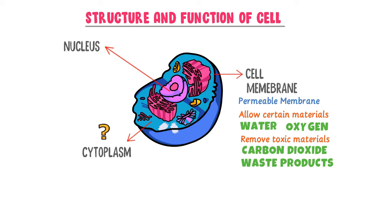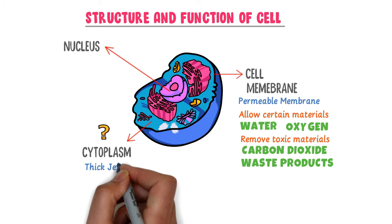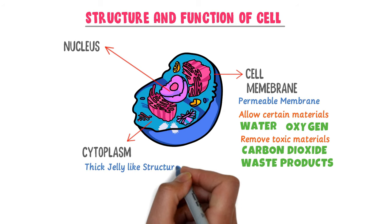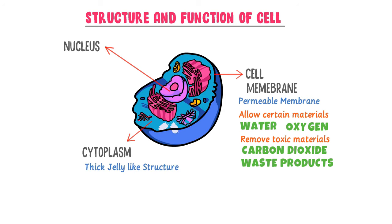What is cytoplasm? Cytoplasm is the thick jelly-like structure and it provides shape to the cell. It means that different shapes of the cell are due to the different shapes of the cytoplasm. All cellular functions and cellular reactions take place here in the cytoplasm.